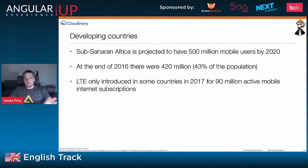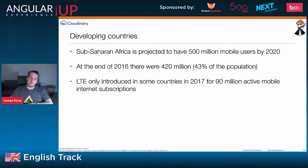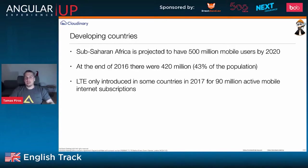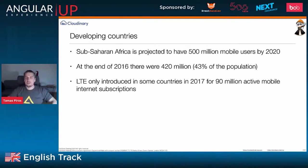More statistics: there are 500 million mobile users in Sub-Saharan Africa in 2020. That's a lot of potential customers you have access to. But in Sub-Saharan Africa, they may not have the fastest internet. Think about your user base — that's really the bottom line.